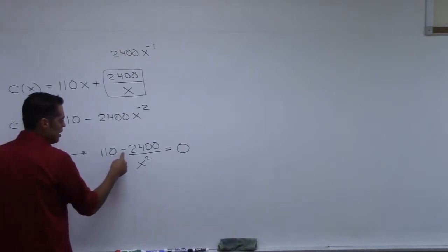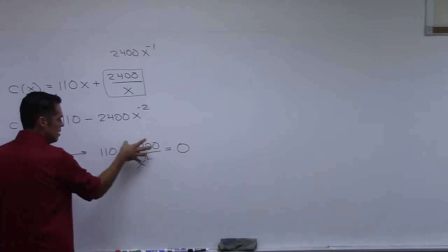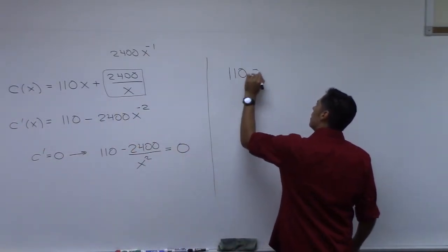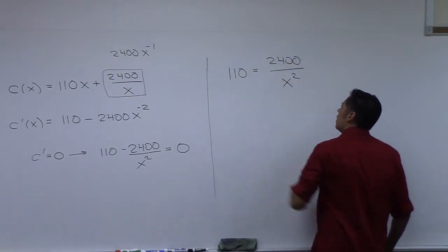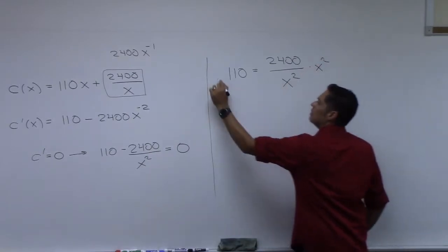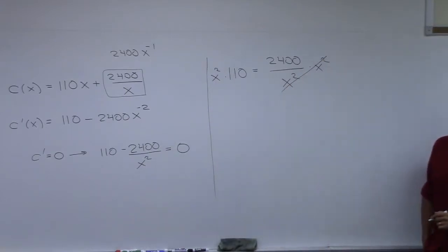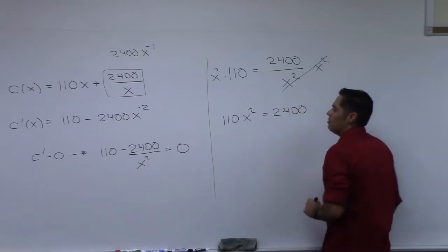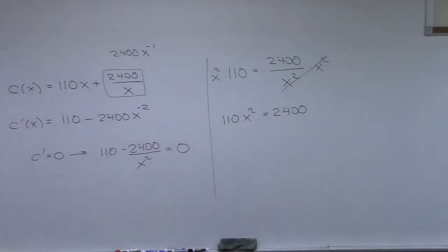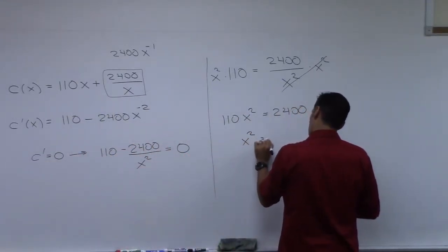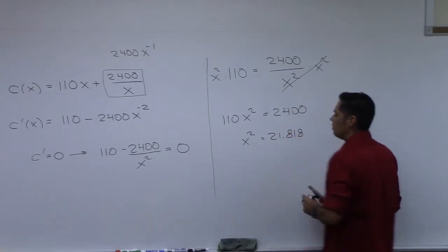This is not the only way you could do it. Since you have 110 minus 2400 over x squared equals zero, move the fraction to the other side: 110 equals 2400 over x squared. Multiply both sides by x squared to clear fractions, giving 110x squared equals 2400. Divide by 110: x squared equals approximately 21.8.